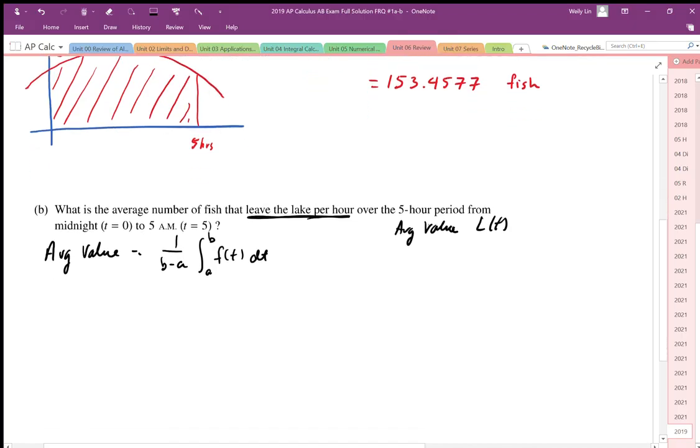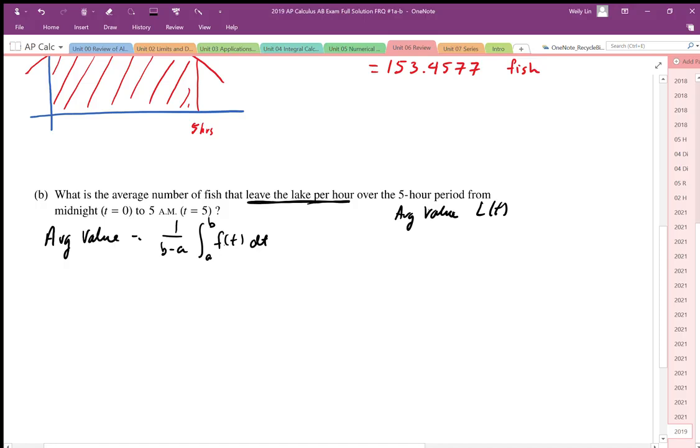We need to find the total number of fish under the L of t function and divide it by the interval. Another way we can look at this is the average fish per hour equals the total number of fish, which is what the integral will calculate, divided by the time interval.